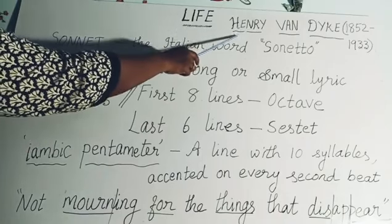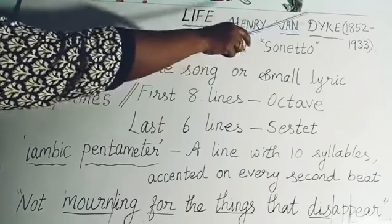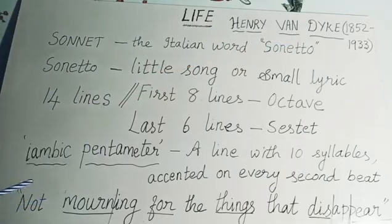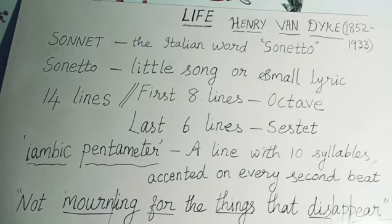Let's see about the poet. Henry Van Dyke — his period was from 1852 to 1933. He was an American author, poet, educator and clergyman. He served as a professor of English literature at Princeton University between 1899 and 1923. He was elected to the American Academy of Arts and Letters and received many other honors.